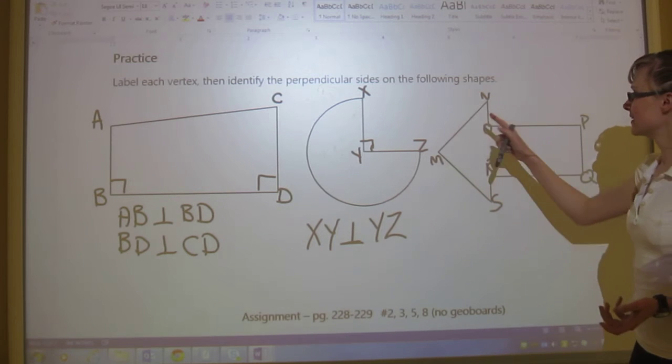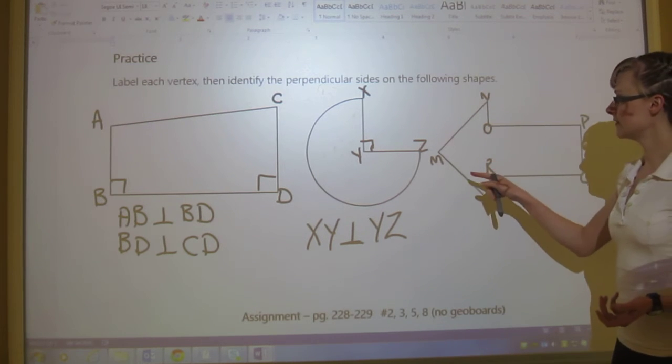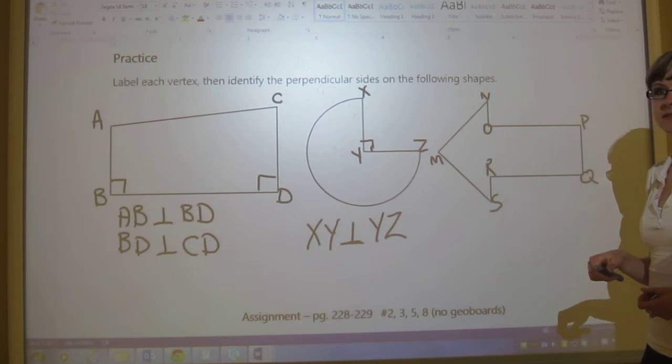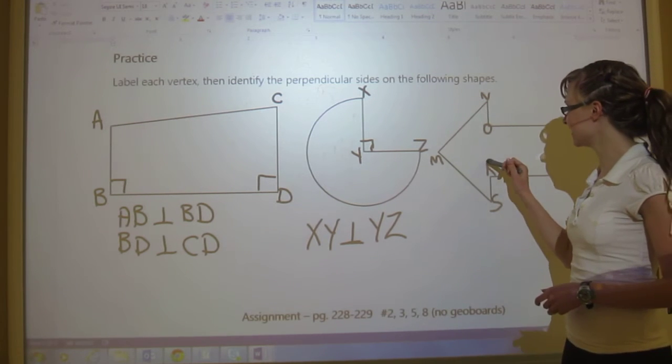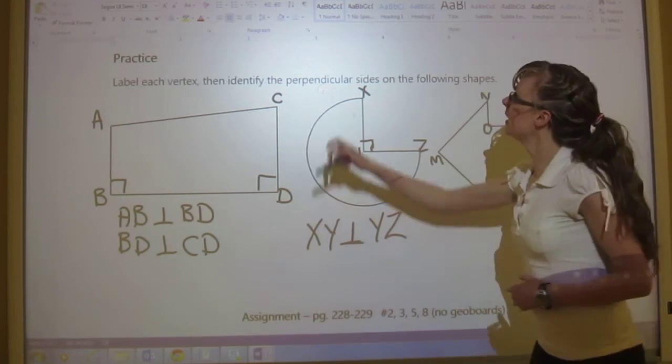Okay, so I guess this is one, two, three, four, five, six, seven, a septagon. Whatever. We've got to find all of the perpendicular parts.